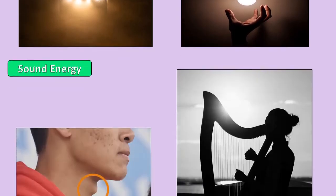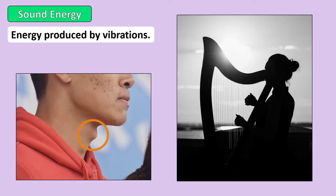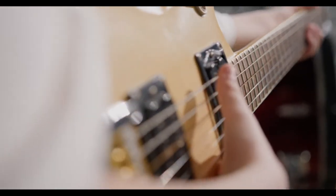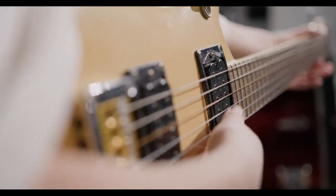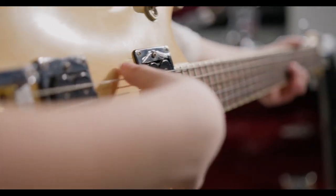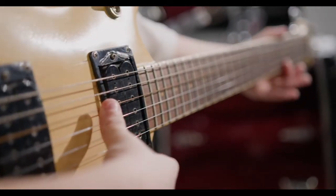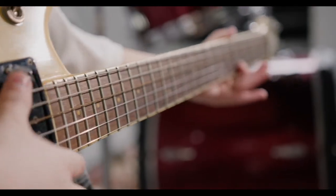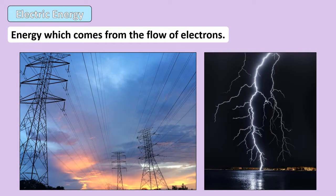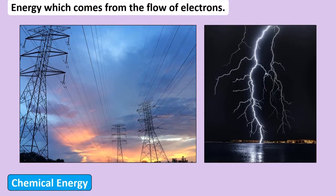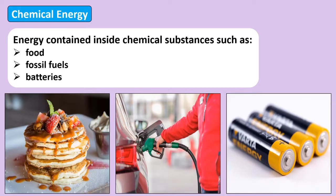Sound energy is a form of energy produced from vibrations which enable us to hear. When a musician plucks the strings of a guitar, the strings vibrate and create sound which we can hear. Our vocal cords also vibrate when we exhale air through them, allowing us to make sounds and speak. Electric energy is the energy contained in electrons as they flow through wires, and can also be naturally seen when lightning strikes. Chemical energy is the energy stored inside chemical substances such as food, fossil fuels, and batteries.